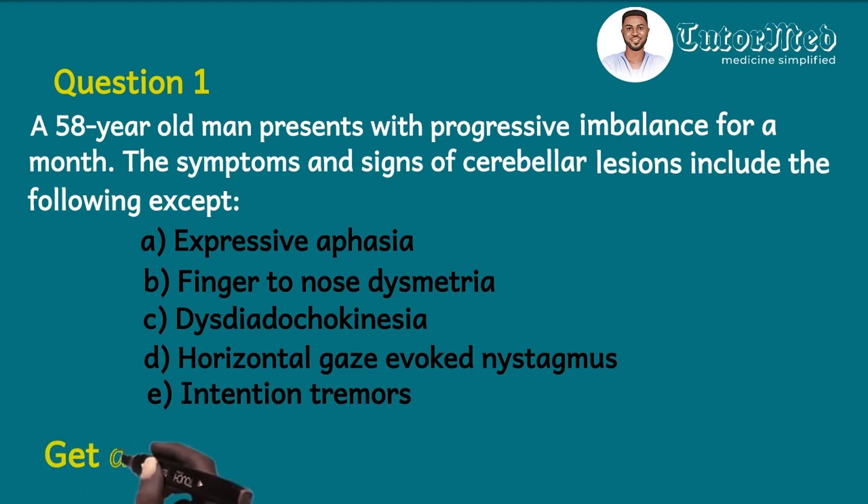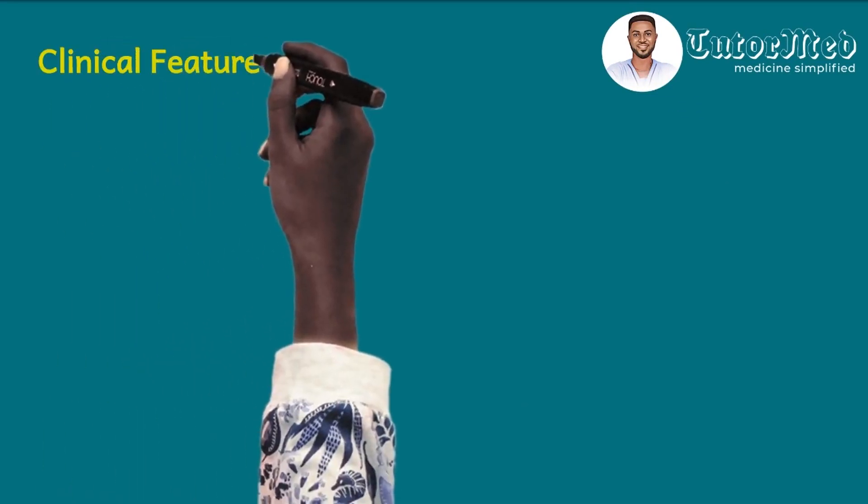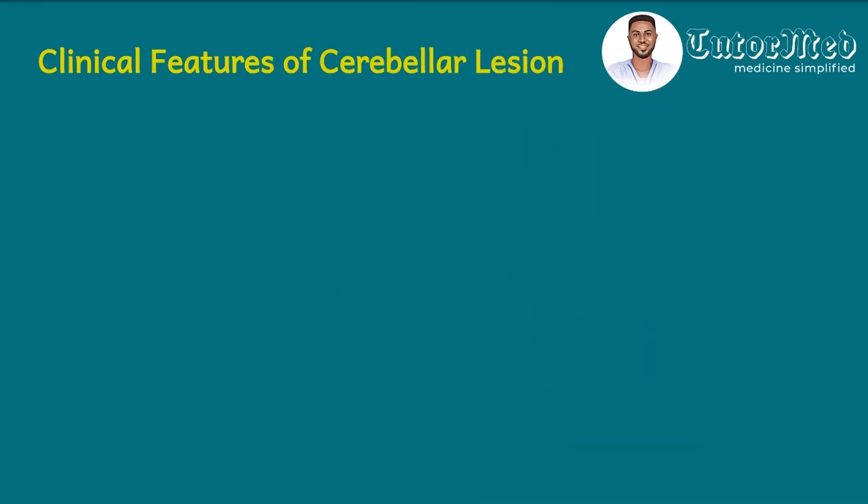You do not have to know the answer. All you need to do is to get an exercise book and then open your textbook and then read on cerebellar lesions. But for this question, the answer is A. Then let's open our reference texts and see how we arrived at the answer. Now this assumes that you do not know anything about cerebellar lesions, don't worry.